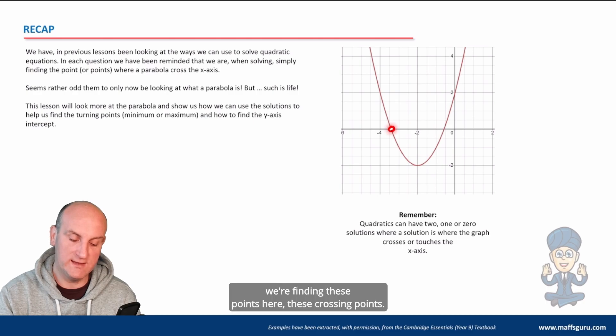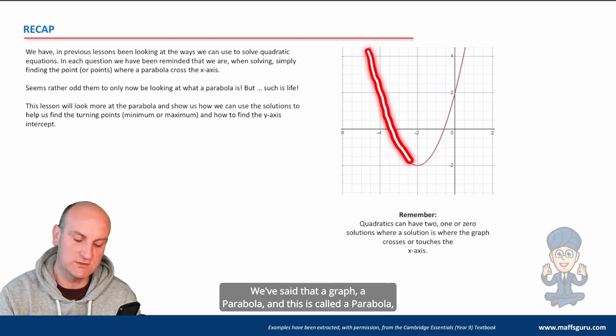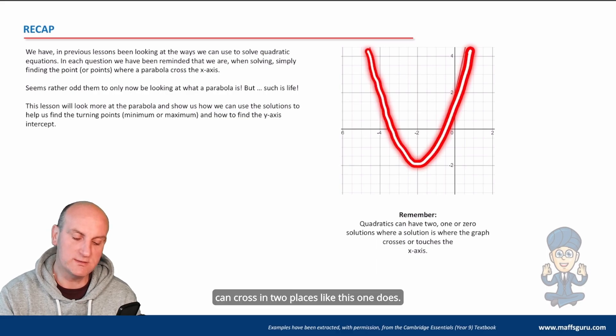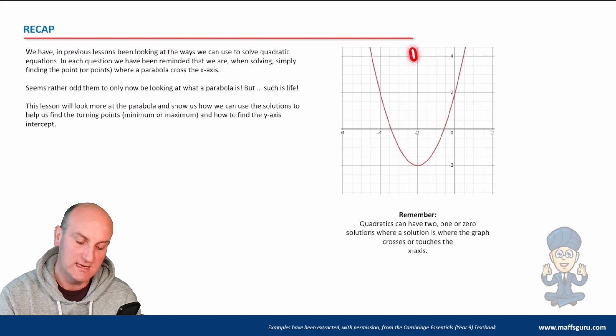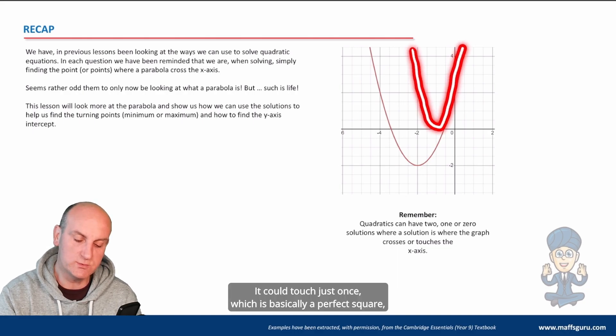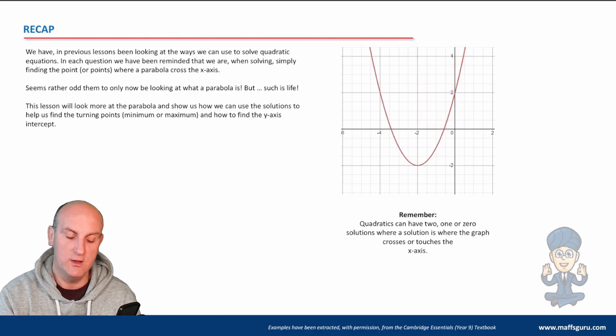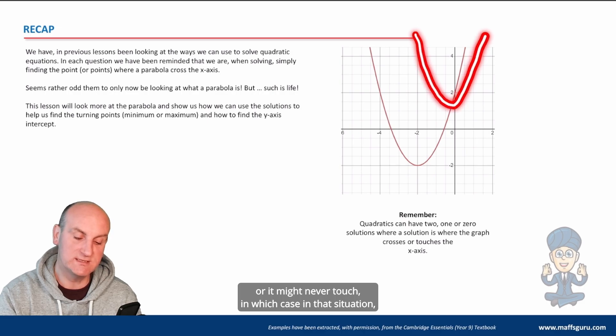A parabola, and this is called a parabola, can cross in two places like this one does. It crosses the x-axis in two places. It could touch just once which is basically a perfect square, or it might never touch, in which case it would have no solutions.